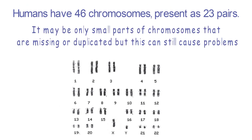It may only be small parts of chromosomes that are missing or duplicated, but this can still cause problems. Here, a small section of chromosome 1 has been lost. But it may also be that the section is duplicated, resulting in too much DNA at that point on the chromosome.